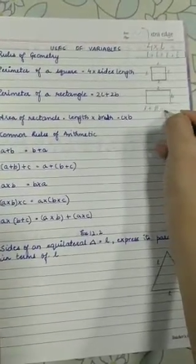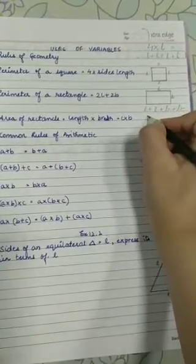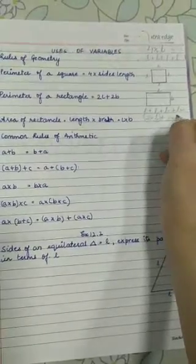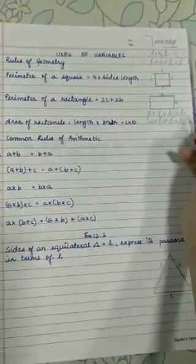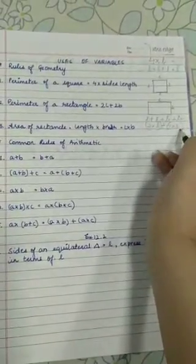It will be the same. So instead of writing it so many times, we can write 2 into length plus 2 into breadth. This becomes 2L plus 2B.